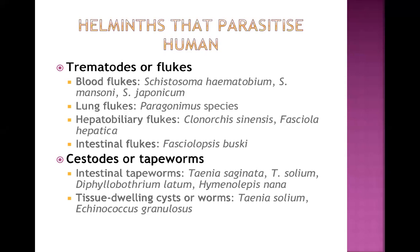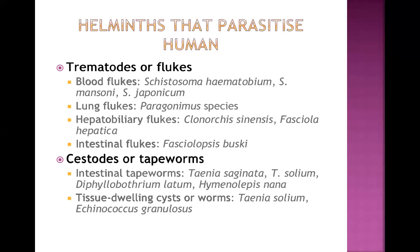Among the lung flukes we have Paragonimus species; an important type is Paragonimus westermani, which can cause lung problems. Among hepatobiliary flukes we have Clonorchis sinensis and Fasciola hepatica. Clonorchis sinensis is important because it can cause cholangiocarcinoma in the long run. Among intestinal flukes we have Fasciolopsis buski, which is very big in size.